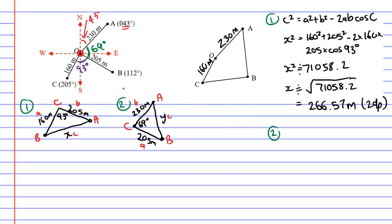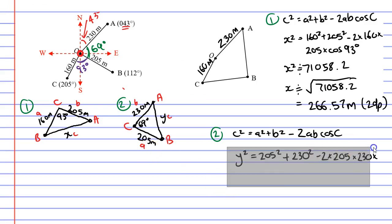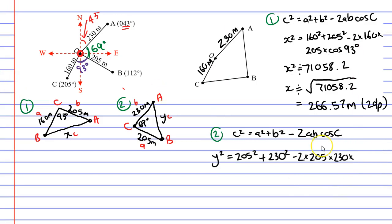Now looking at triangle two. Using the same formula, c squared equals a squared plus b squared minus 2ab cos capital C. Now, lowercase c this time is Y. We're looking at this triangle here. Y squared. Lowercase a is 205, so 205 squared. B, lowercase b is 230 squared minus 2 times a, 2 times 205 times 230 times cos of capital C, our angle, 69 degrees.